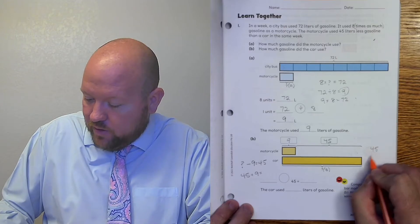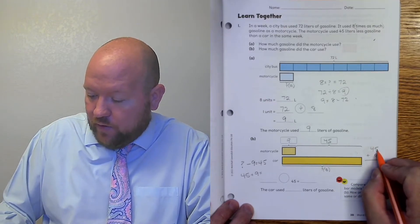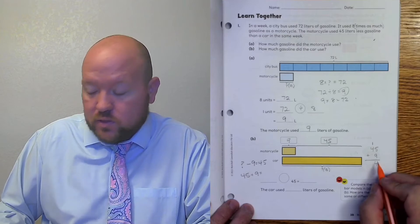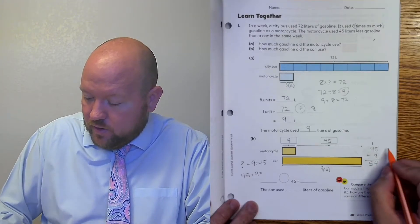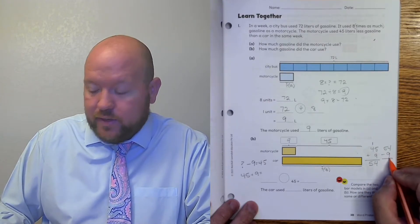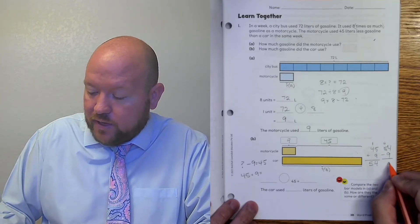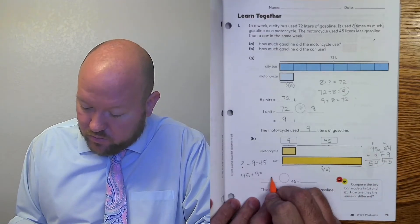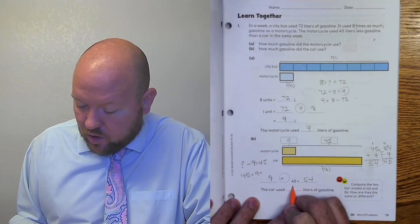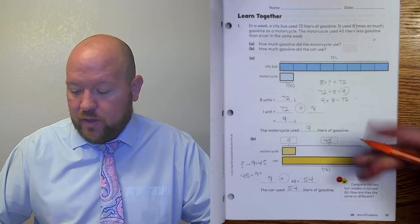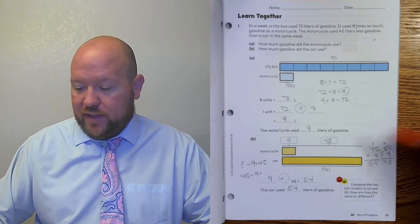Let's do that: 45 plus nine. Five plus four equals 14, one plus four equals five — so 54. Let's check that: 54 minus nine. Four minus nine, I need to regroup. This becomes a four, this becomes a 14. 14 minus nine is five. Four minus nothing is four. Those two check out, therefore I can be confident that 54 is my answer. So nine plus 45 equals 54. The car used 54 liters of gasoline. So here we have a two-step problem, and this one just made more sense to draw two comparison bar models.